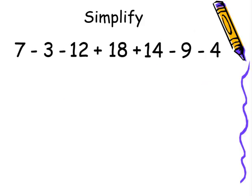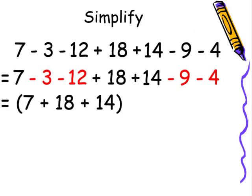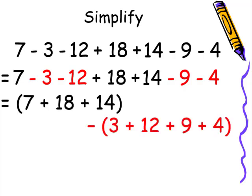Let's group our positive numbers and our negative numbers: 7 plus 18 plus 14 minus 3 plus 12 plus 9 plus 4. Positive numbers: 7 plus 18 plus 14 is 39. Negative numbers: 3 plus 12 plus 9 plus 4 is 28. In this case, I don't feel the need to use a t-chart, so 39 minus 28 is 11.